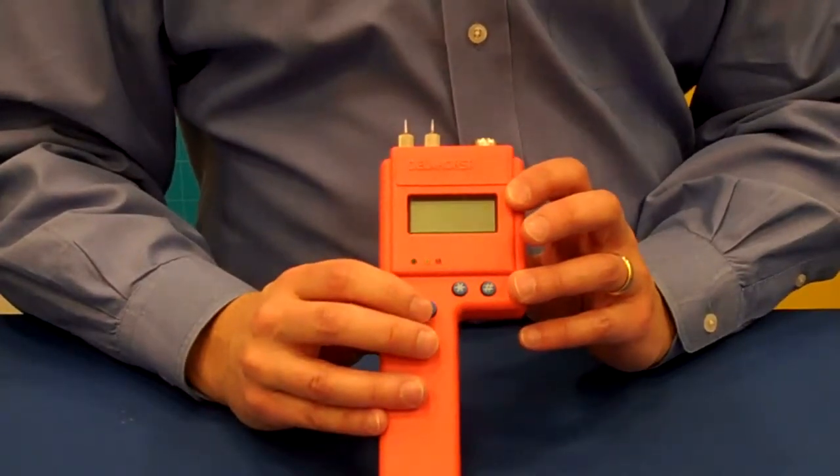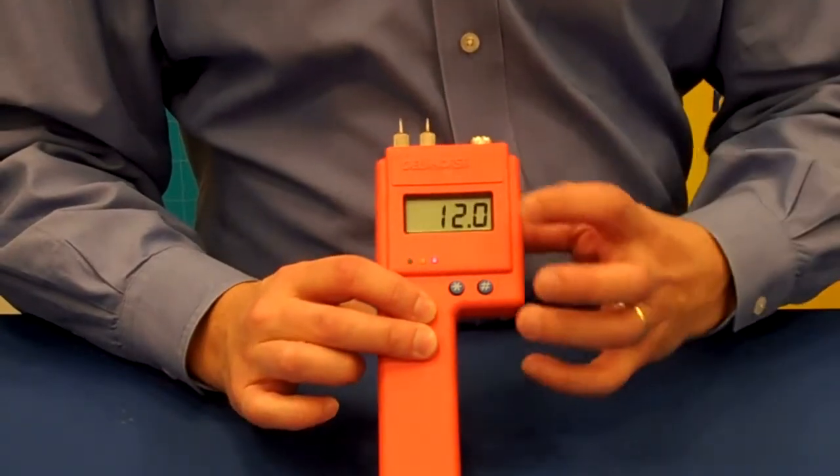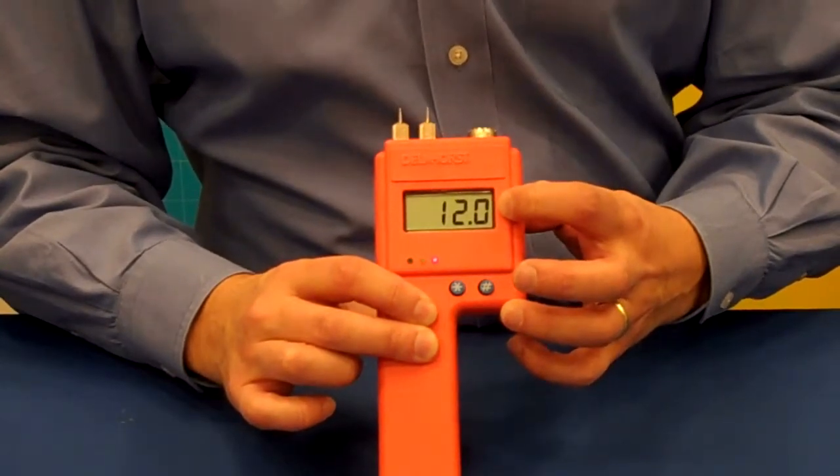A couple of other features in the BD2100 are the built-in calibration check. By pressing these two buttons together, the meter will read twelve percent, which just tells you that it's electrically in calibration.